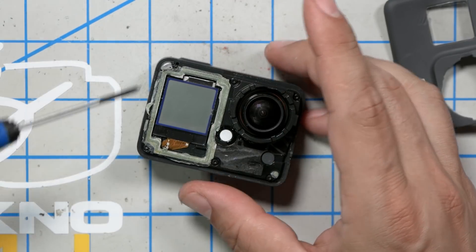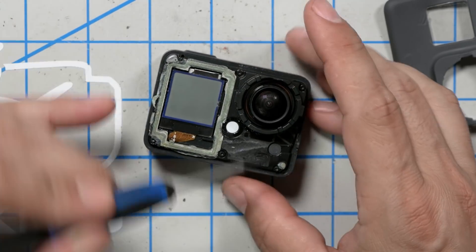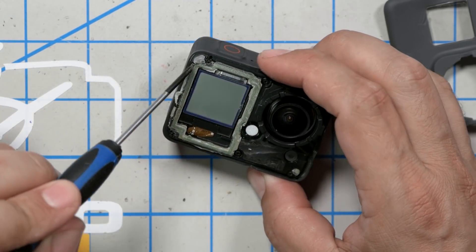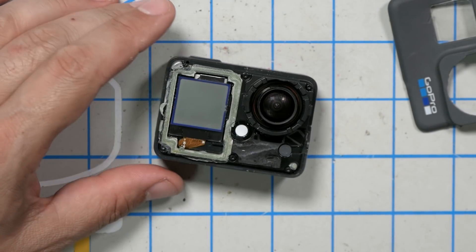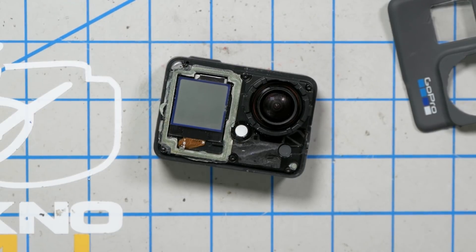Next step is to remove these tiny screws here. One, two, three, four, five, six. Let's find out if that's all of them. Oh great, they're Torx screws. Well, of course they are. I don't have a Torx bit this small. Or do I?